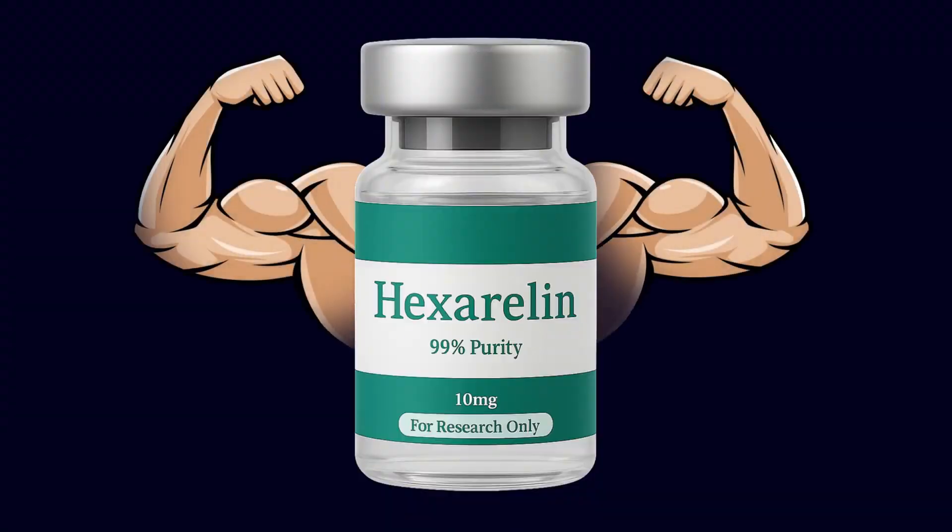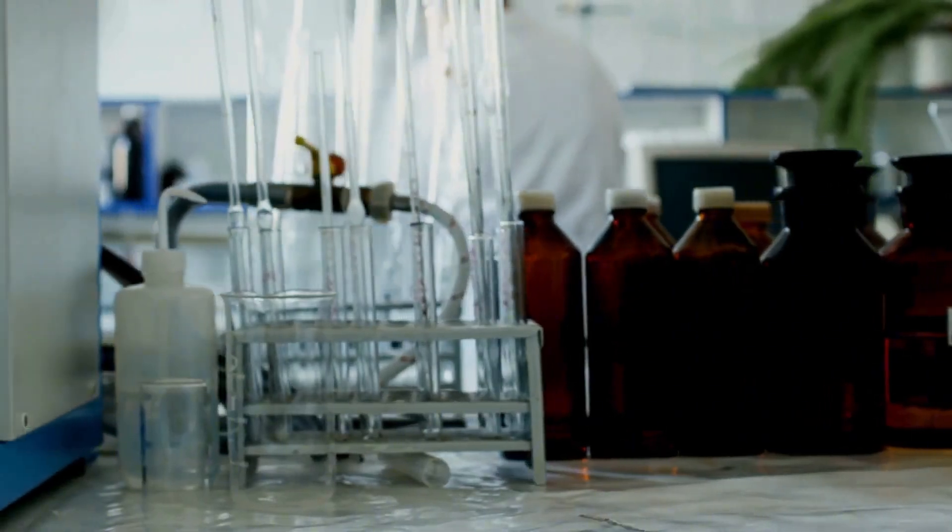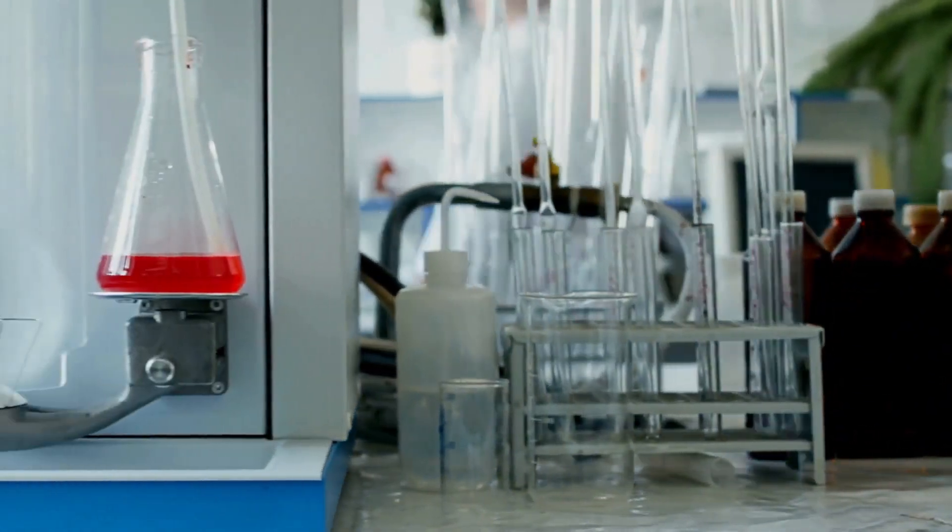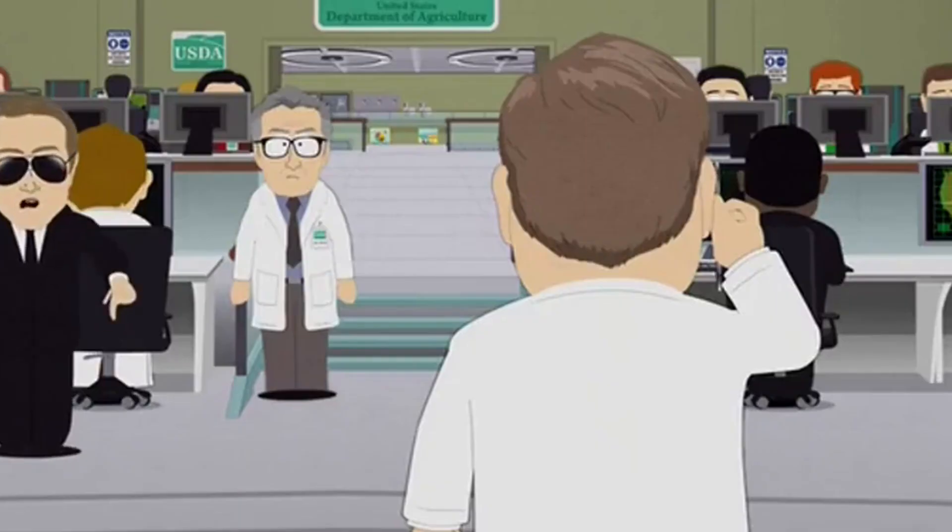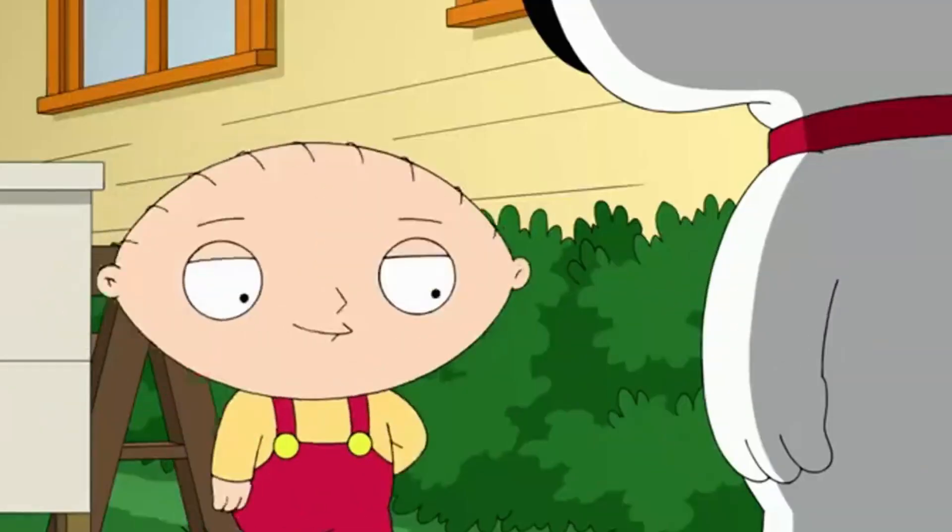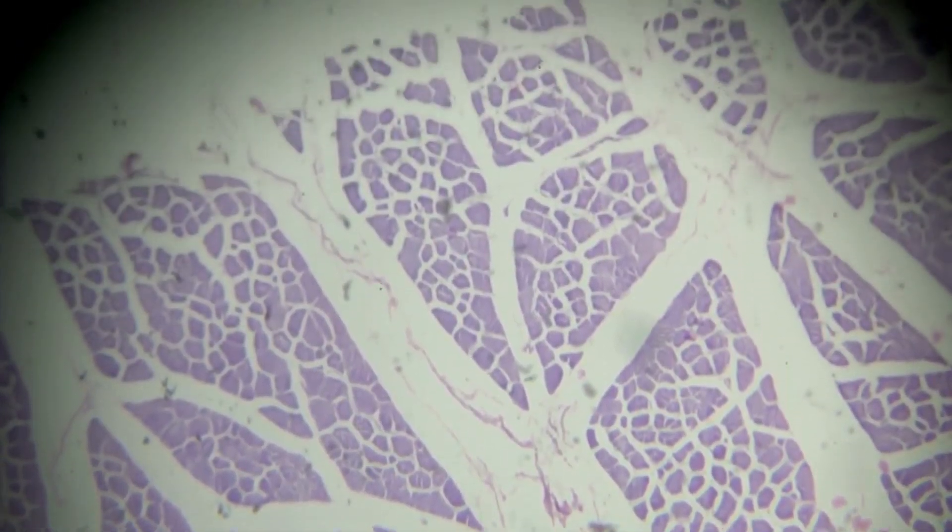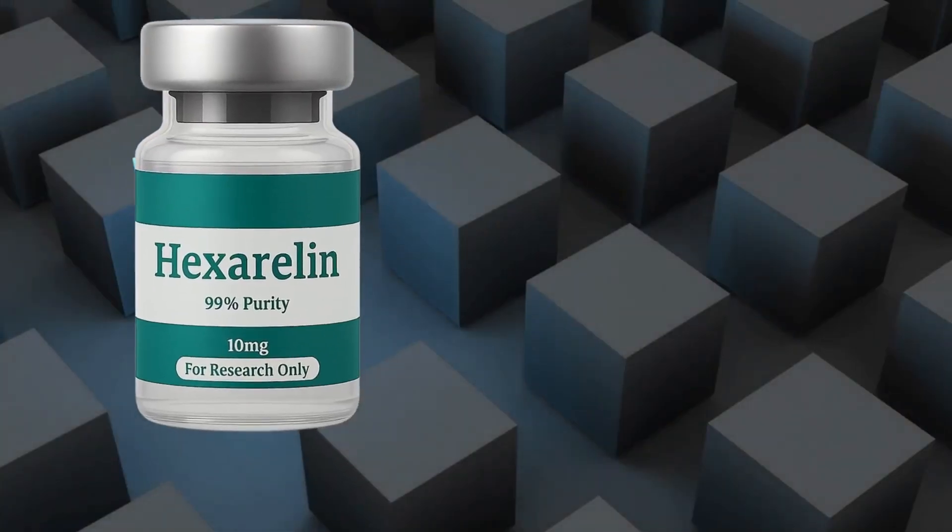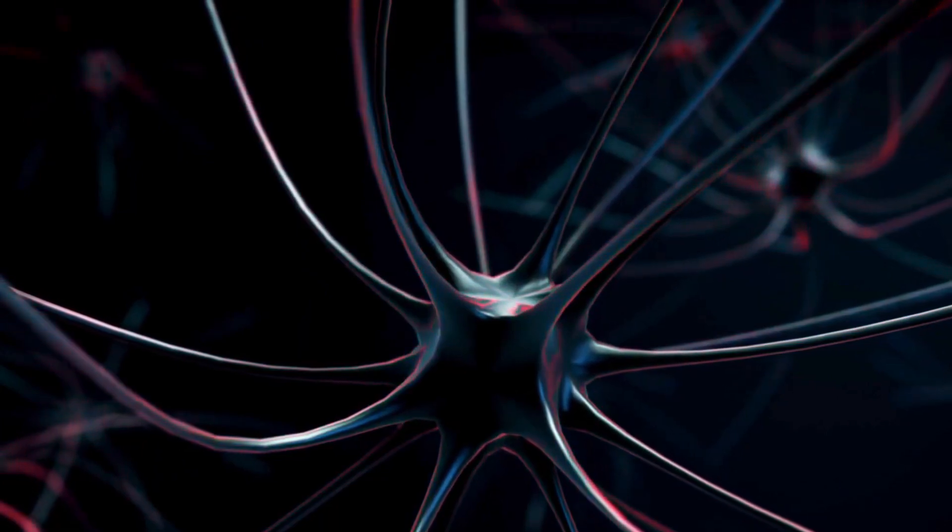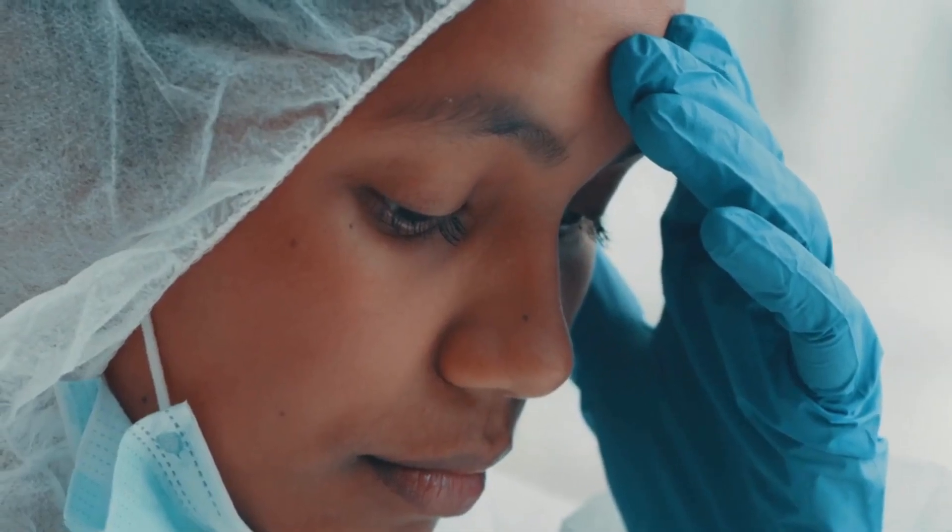Hexarelin is a potent growth hormone releasing peptide, GHRP, derived from the same family as GHRP-2 and GHRP-6, but designed for stronger and more consistent GH stimulation. It binds to ghrelin receptors in the pituitary gland and hypothalamus, triggering large pulses of growth hormone while also boosting IGF-1 levels. This results in enhanced muscle recovery, improved collagen synthesis, and potential joint protection through strengthened connective tissue.